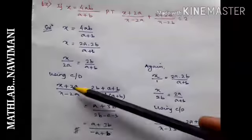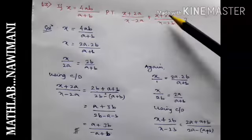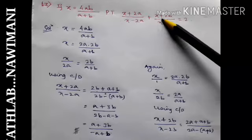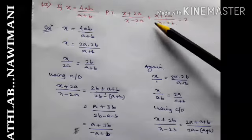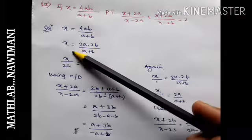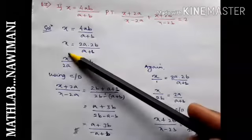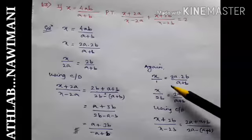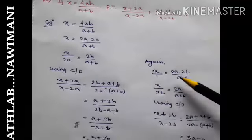So now what I will do is I will take 2b down. After that, I will apply componendo and dividendo again using 2b at the bottom and 2a I will keep here.